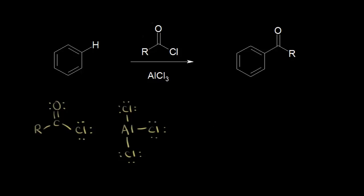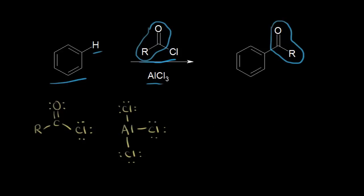In the last video, we looked at Friedel-Crafts alkylation. In this video, we're going to do an acylation, which is very similar to the alkylation. We start off with benzene, and we add an acyl chloride. We also use aluminum chloride as our catalyst. The acyl group has substituted in for one of the aromatic protons — that's our electrophilic aromatic substitution reaction. The mechanism for an acylation is similar to an alkylation, although there is an important difference.